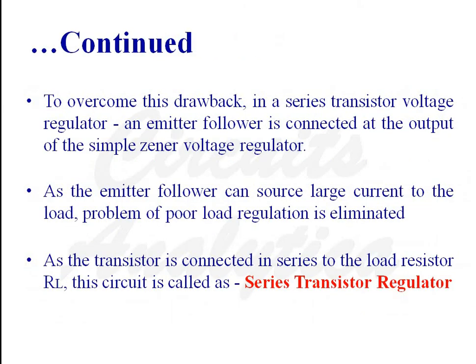To overcome this drawback, in a series transistor voltage regulator, an emitter follower is connected at the output of the simple zener voltage regulator. As the emitter follower can source large current to the load, the problem of poor load regulation is eliminated. Since the transistor is connected in series to the load resistance RL, this circuit is called a series transistor voltage regulator.